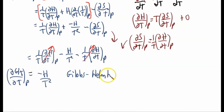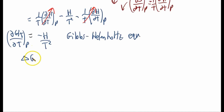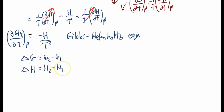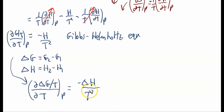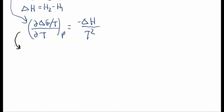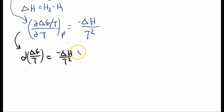We can write this for a process: delta G equals G2 minus G1 and delta H equals H2 minus H1. By analogy, the partial derivative of delta G over T with respect to temperature at constant pressure equals negative delta H over T squared. This is the differential form. We can also use an integrated form: multiply both sides by dT to get d(delta G over T) equals negative delta H over T squared dT.